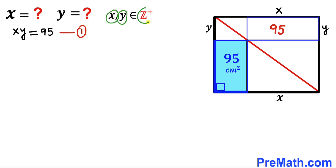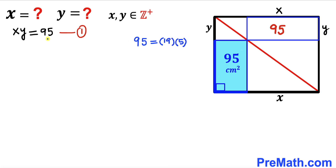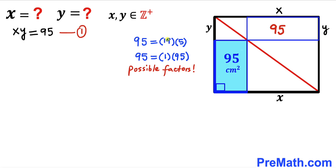Keep in mind that x and y are positive integers — positive whole numbers. Now let's focus on 95. It can be broken down as 19 times 5, where both 19 and 5 are prime numbers. So one option is 19 times 5. Additionally, 95 can be broken down as 1 times 95. So the possible factor pairs of 95 are: 19 × 5 and 1 × 95.